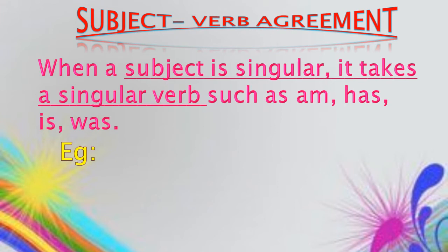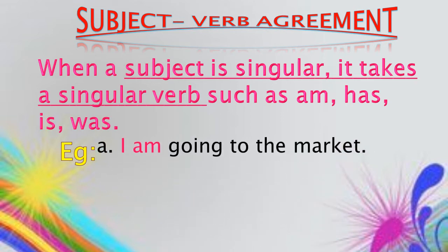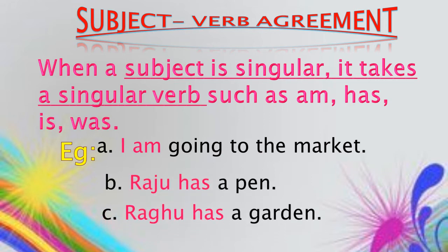Verb agreement. When a subject takes a correct verb, we call it subject-verb agreement. When a subject is singular, it takes a singular verb, such as: am, has, is, was, etc. Example: 'I am going to the market.' 'Raju has a pen.' 'Regu has a garden.' Raju and Regu are singular subjects and take singular verbs.